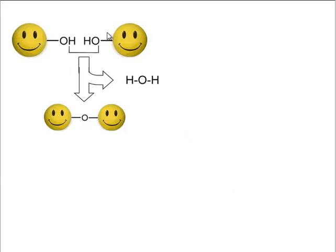In our last lesson, we saw that the molecules that make up cells can be monomers or polymers. And in order to stay alive, sometimes you have to make monomers from polymers or make polymers from monomers. So if you want to make a polymer, you would join two monomers together in dehydration synthesis.